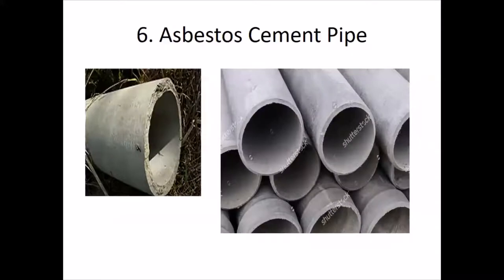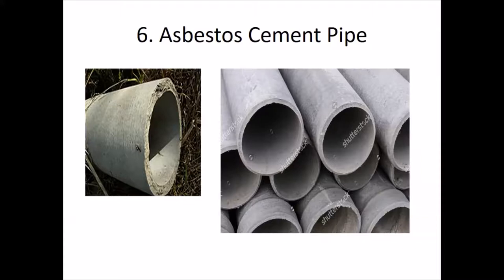Asbestos cement pipes are manufactured from a mixture of cement and asbestos fiber. They are light and can be transported easily, but are very brittle and liable to break if handled carelessly. Cutting, drilling, and jointing can be done easily. These pipes are smooth so carrying capacity is good, and they are not affected by salt, acid, or corrosive agents. They are not intended for high internal pressure and are suitable for distribution systems where internal pressure is low.